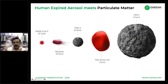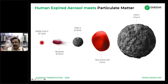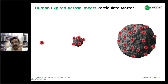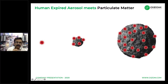This slide gives a better idea of the relationship between human expired aerosols and particulate matter and the possibility of virus spread via PM. The sizes of the virus versus PM2.5 and PM10 show that the virus can easily deposit onto the layers of those particles and be carried along with them.